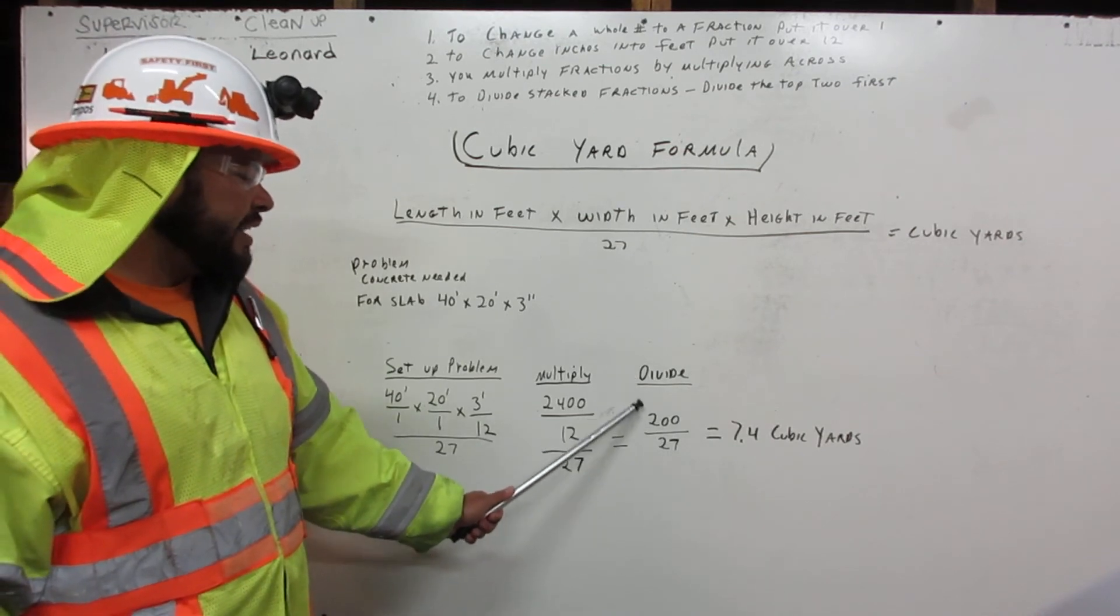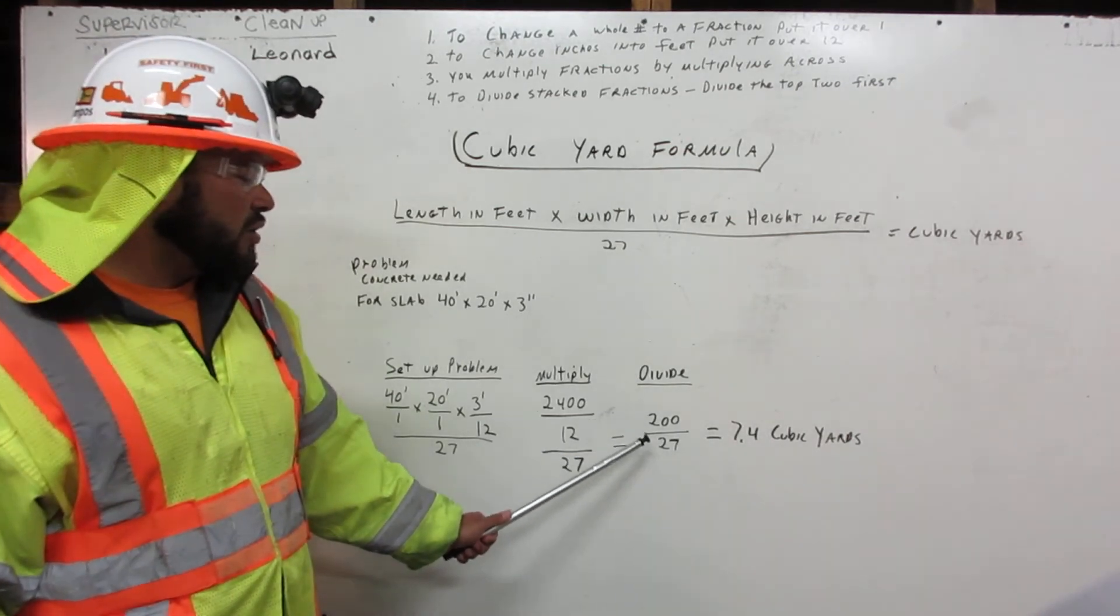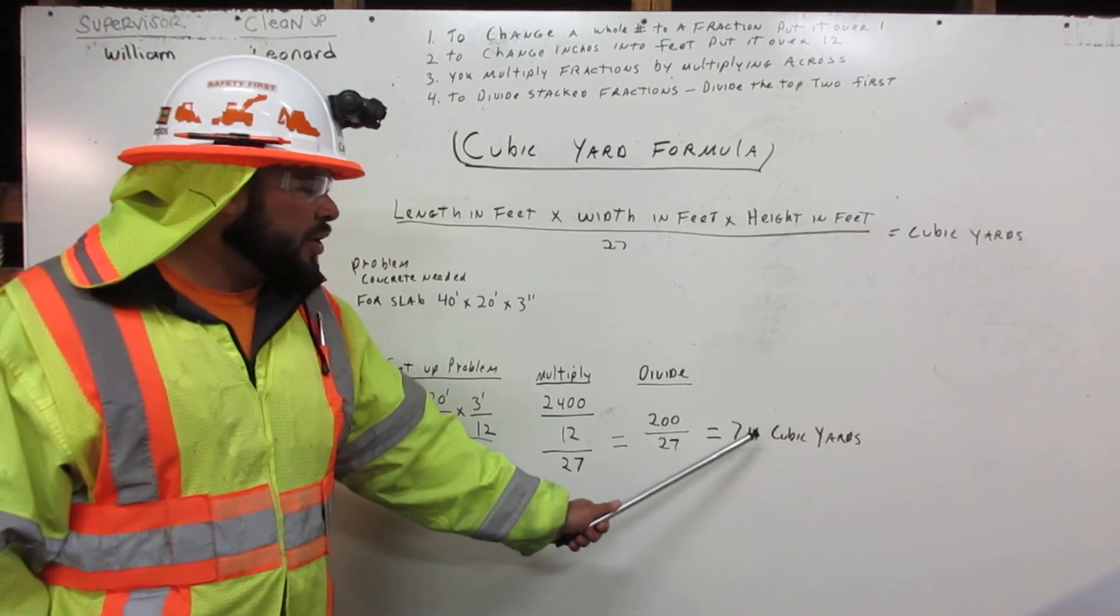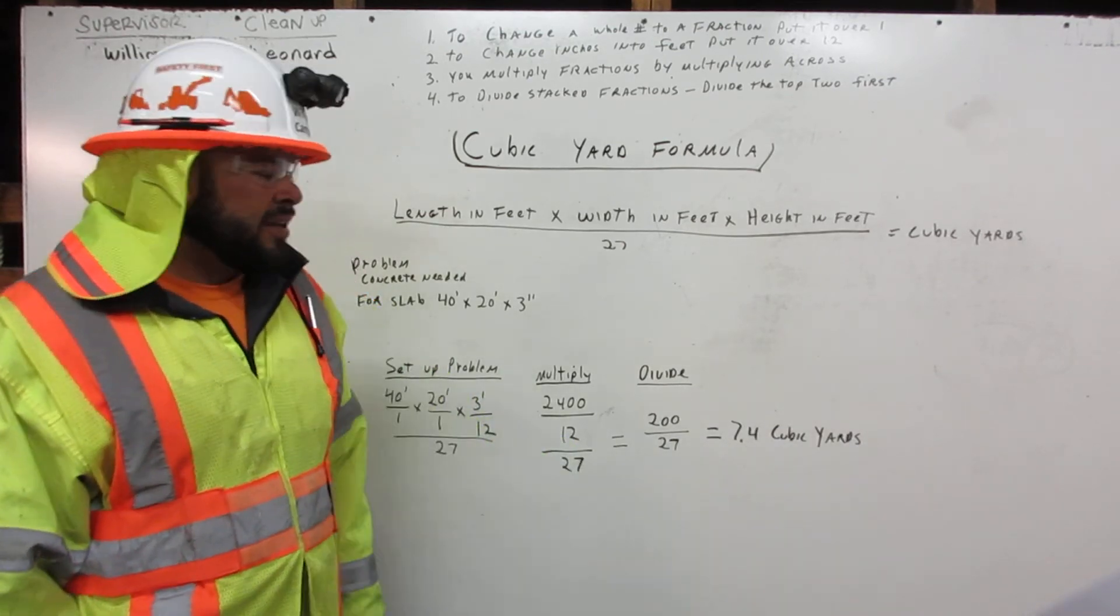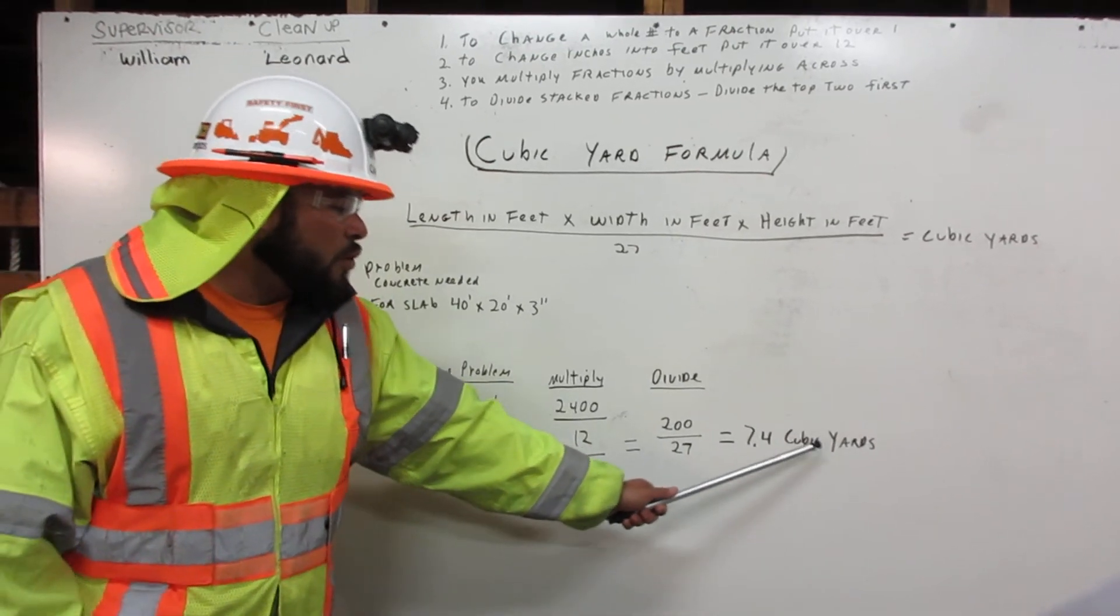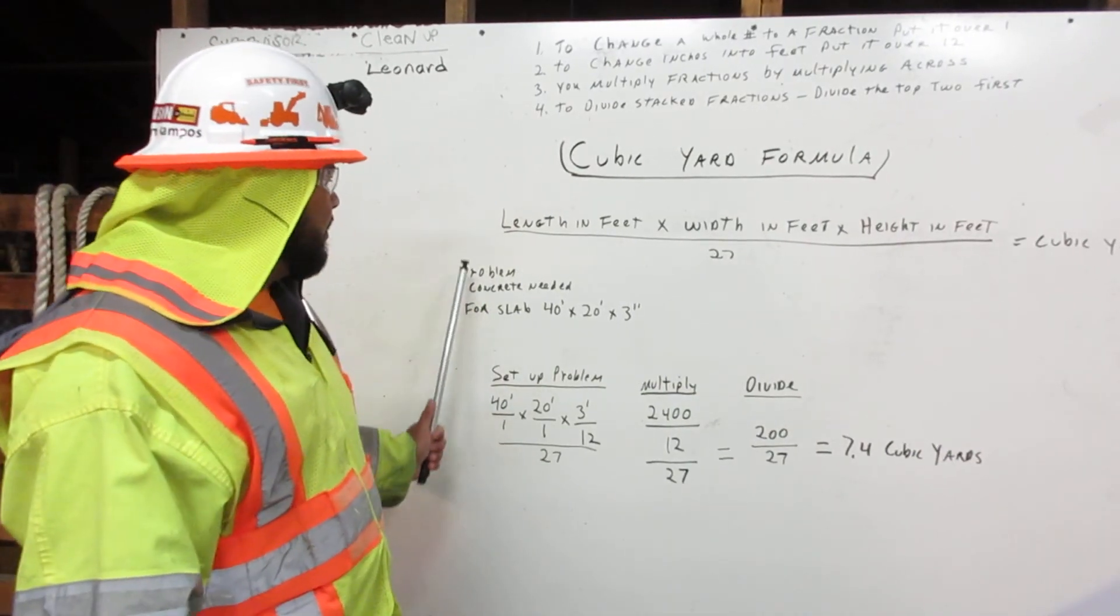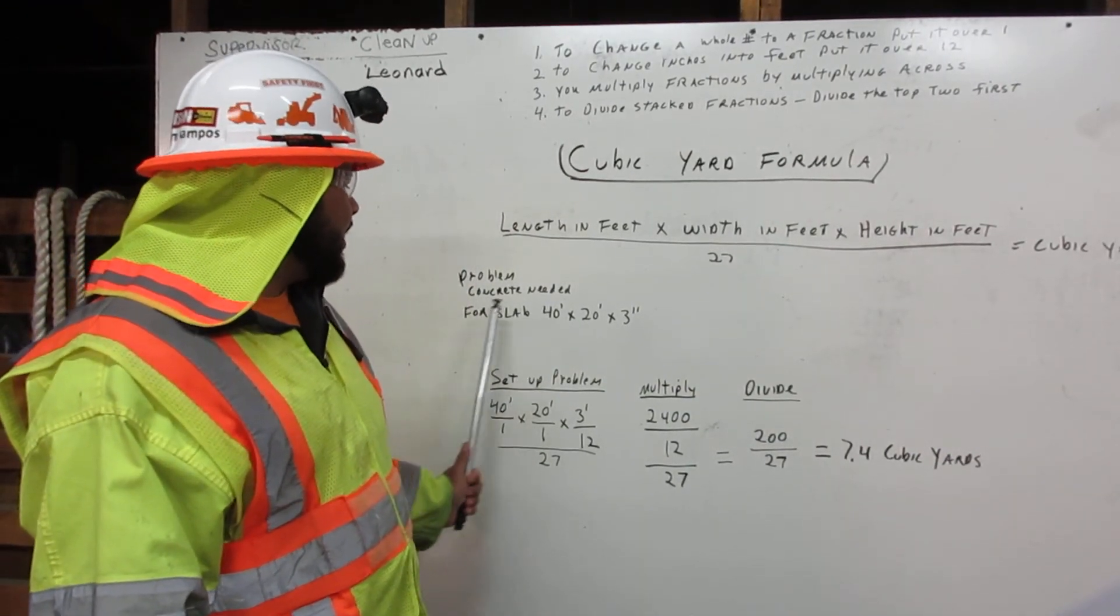Now we divide: 200 over 27 equals 7.4 cubic yards. So we need 7.4 cubic yards for our concrete slab.